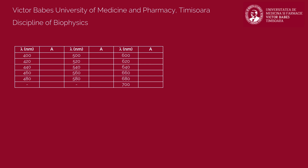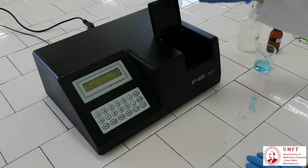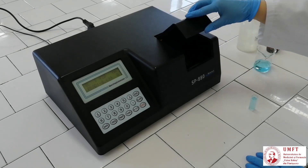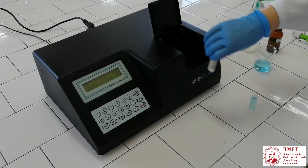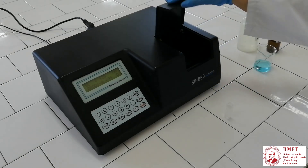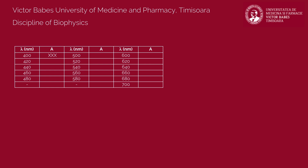Write down the value in the corresponding table. Set the following wavelength — in your case, that's 420 nm. Repeat the aforementioned steps and measure the absorbance of copper sulfate at this wavelength. Record the obtained value in the table. Repeat all the steps and measure the absorbance of copper sulfate for all the wavelengths in the table.